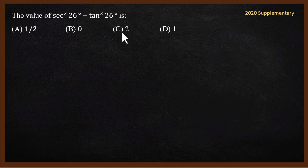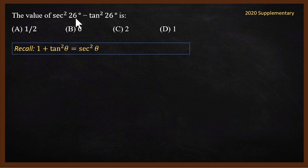The last question is from the 2020 supplementary exam. The question is: what is the value of sec² 26° minus tan² 26°? We will use the identity 1 plus tan² θ equals sec² θ.